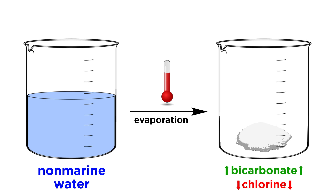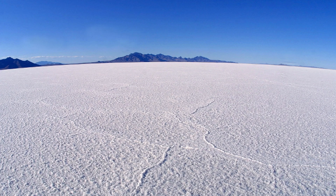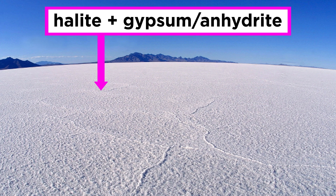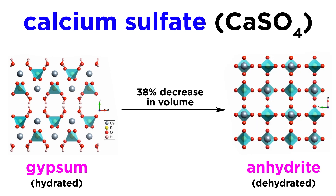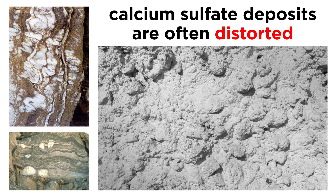Though in general, nonmarine waters tend to be enriched in bicarbonate and depleted in chlorine with respect to seawater. The thickest and most laterally extensive evaporite deposits were formed from the evaporation of seawater and are often predominantly composed of halite and gypsum/anhydrite. Gypsum is the hydrated version of calcium sulfate and readily converts to anhydrite after burial. The conversion of gypsum to anhydrite involves a 38% decrease in volume as the lattice is dewatered, which often results in the deformation of gypsum deposits, especially since anhydrite is sometimes converted back to gypsum later during uplift and exhumation. As a result, calcium sulfate deposits are commonly heavily distorted, even in tectonically quiescent areas.